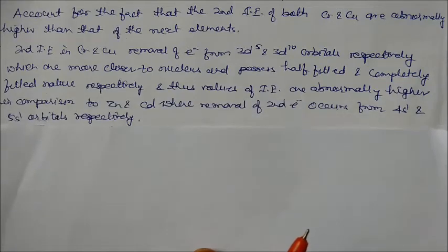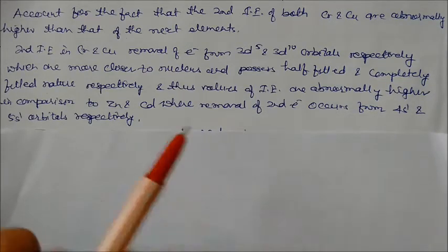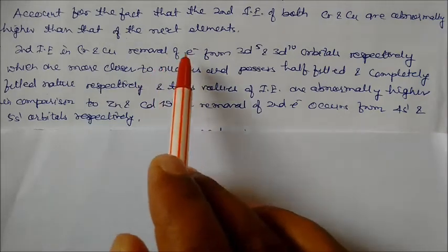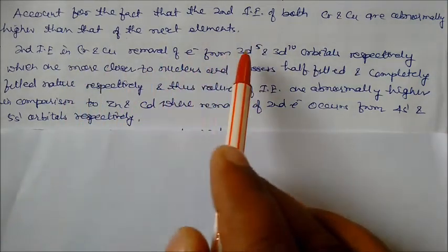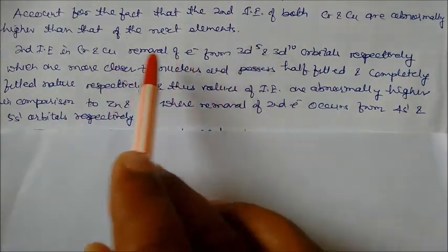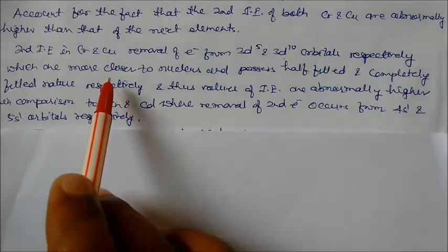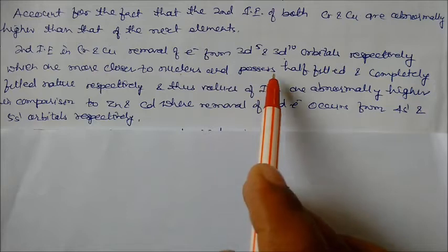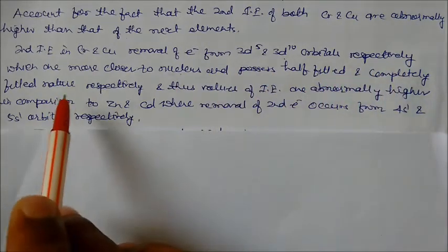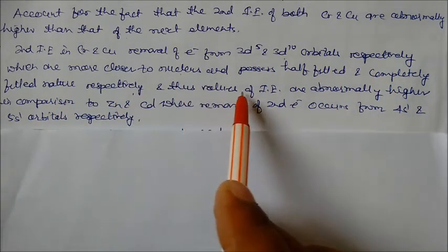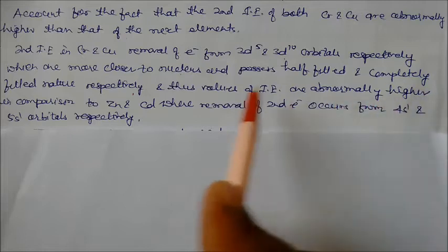The second ionization energy of chromium and copper remove electrons from 3d5. Electrons remove from the 3d5 in case of copper, electron remove from the 3d10 orbital respectively, which are more closer to nucleus and they possess half filled and completely filled nature respectively. Thus the values of ionization energy are abnormally higher.